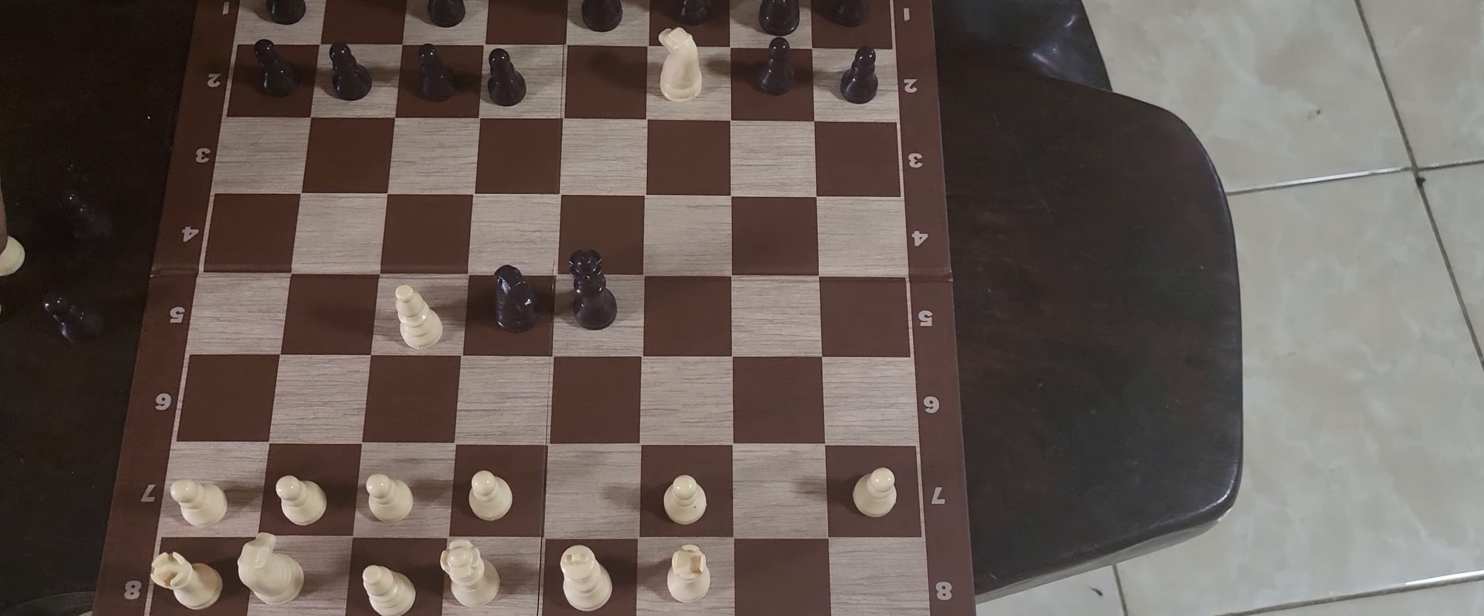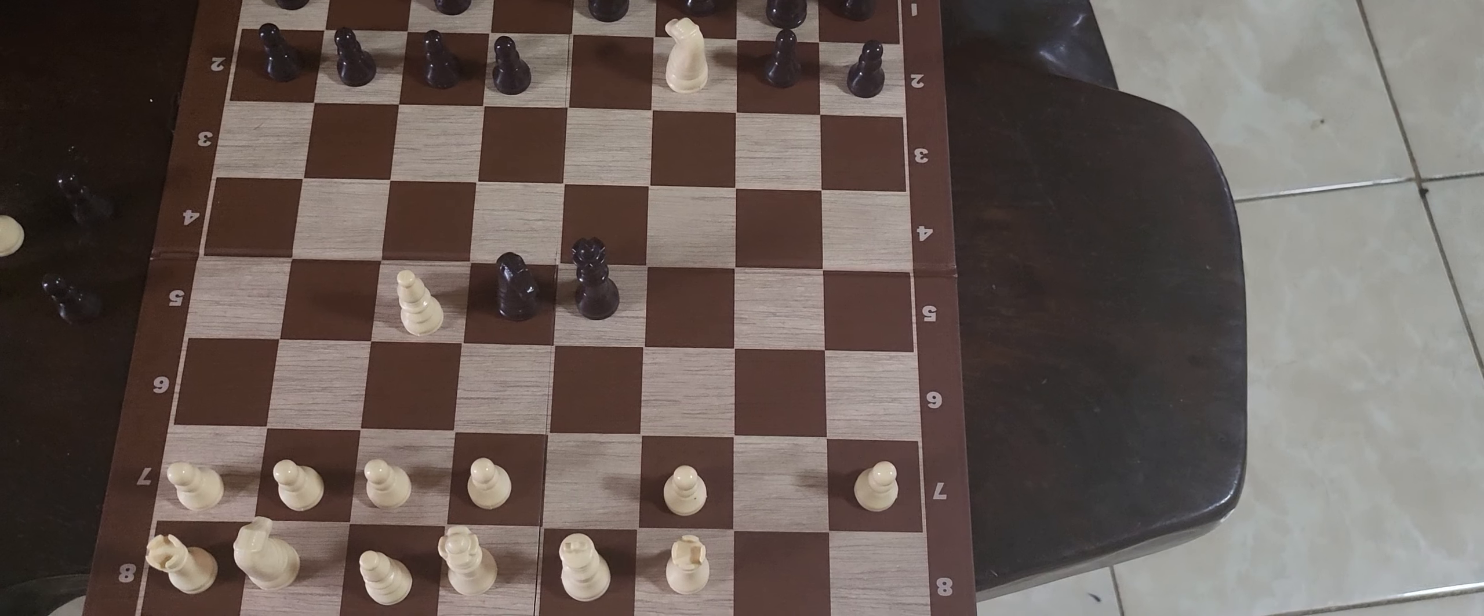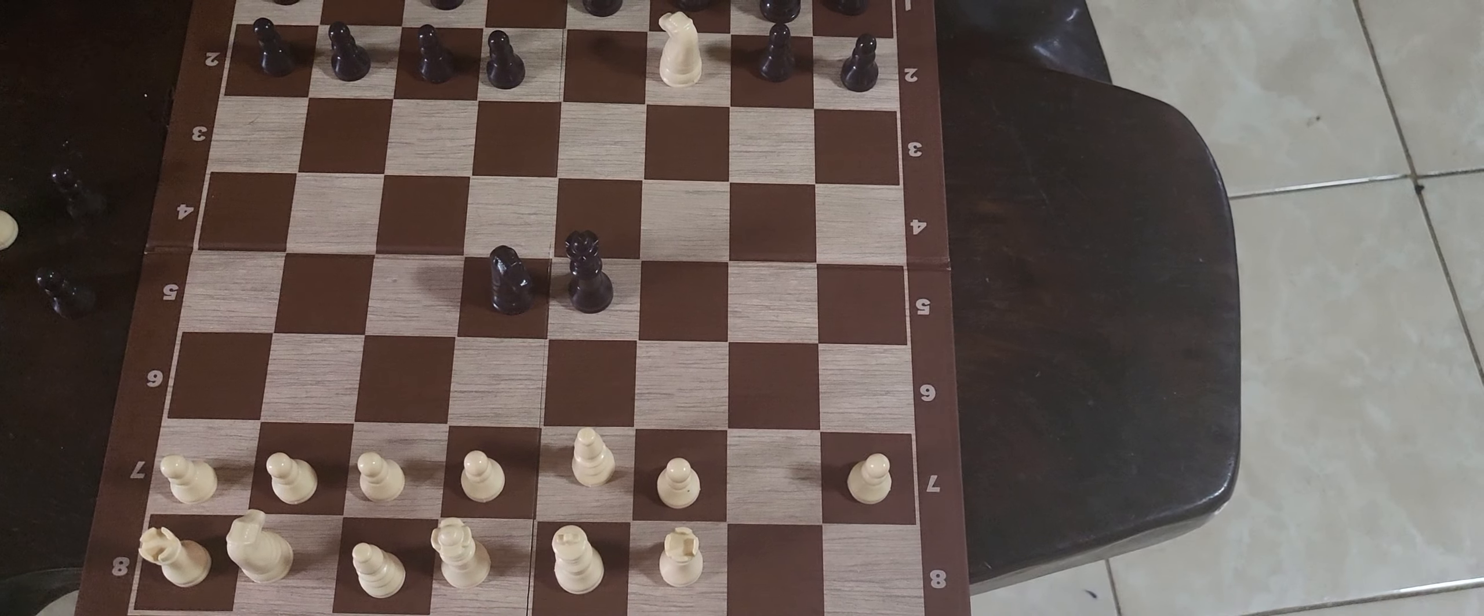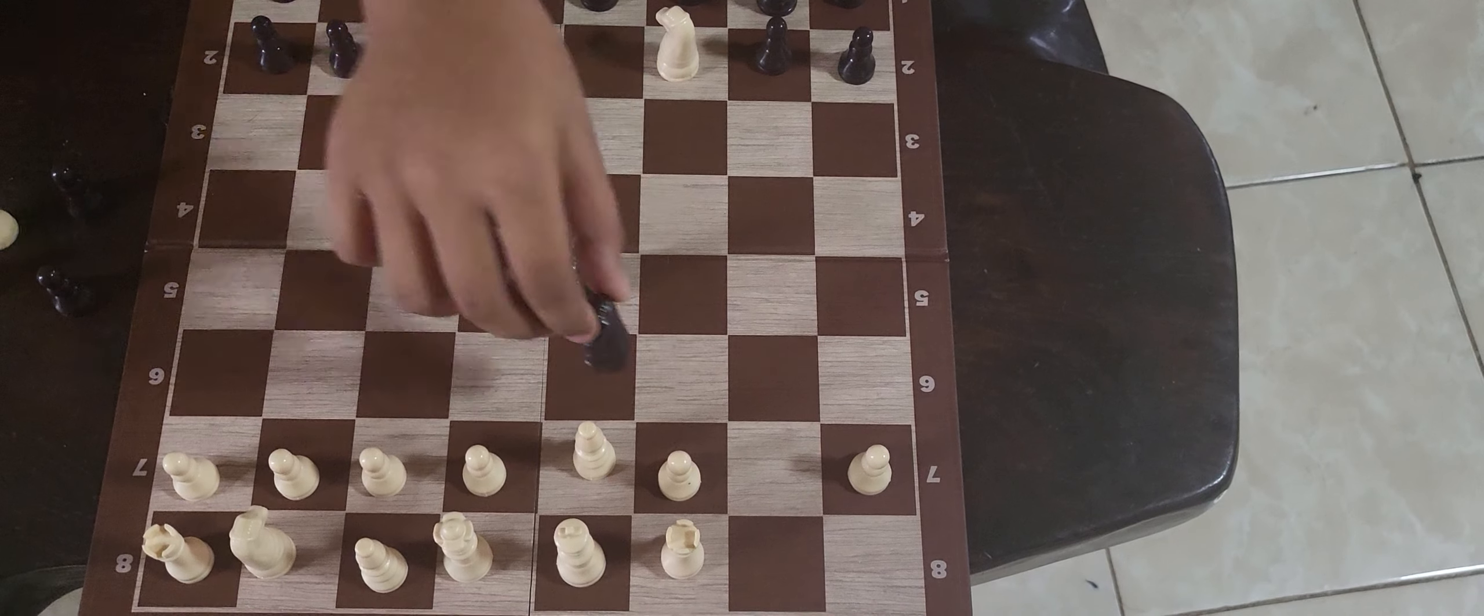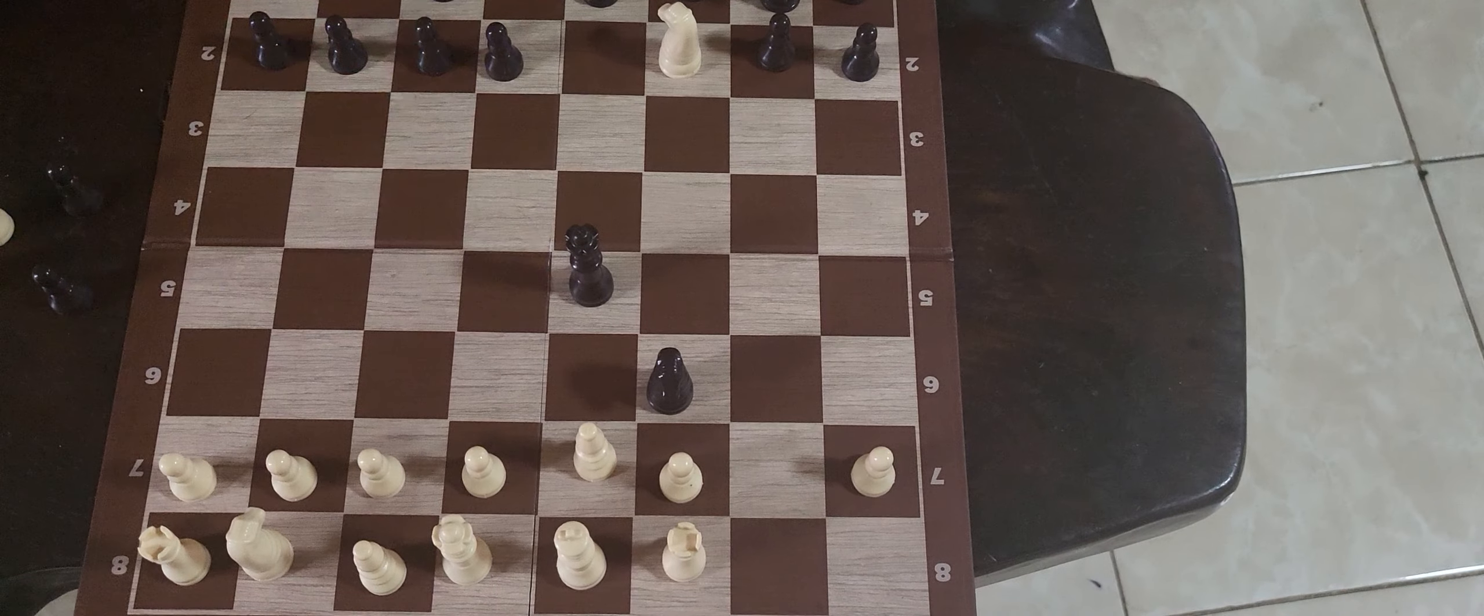And it's check. Then they will block with their bishop. And it's blocked. Then you will move your horse on c6. And it's a checkmate.